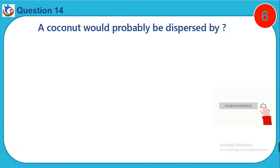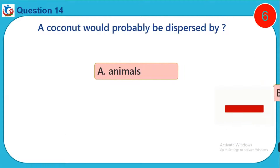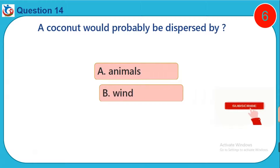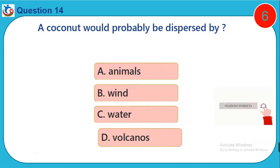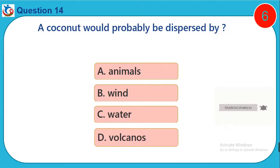Question 14. A coconut would probably be dispersed by: A. Animals. B. Wind. C. Water. D. Volcanoes.